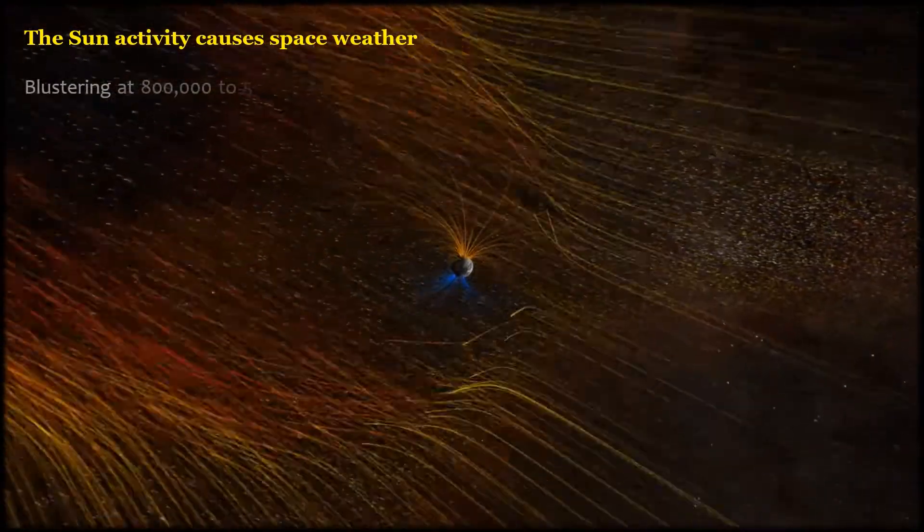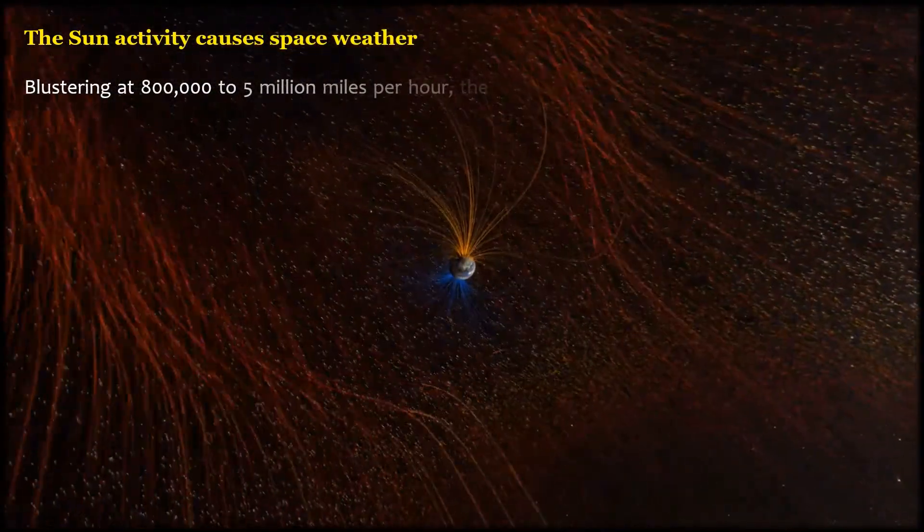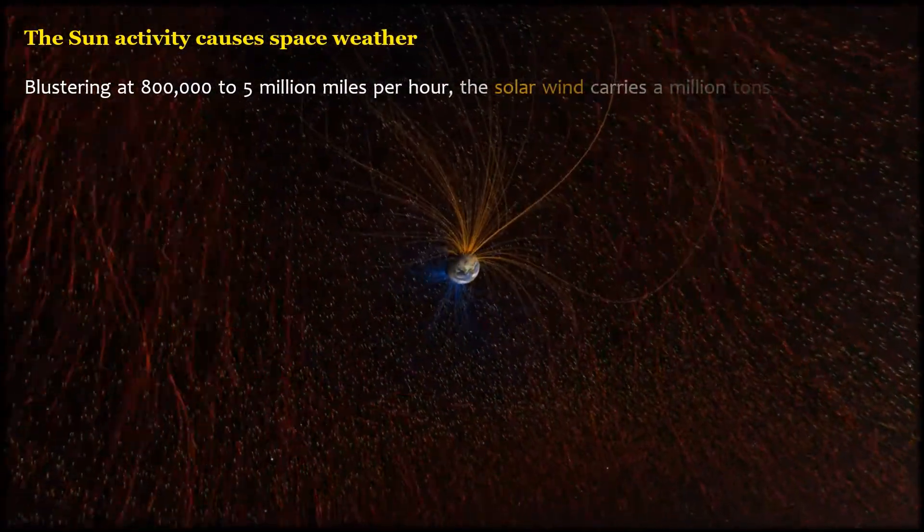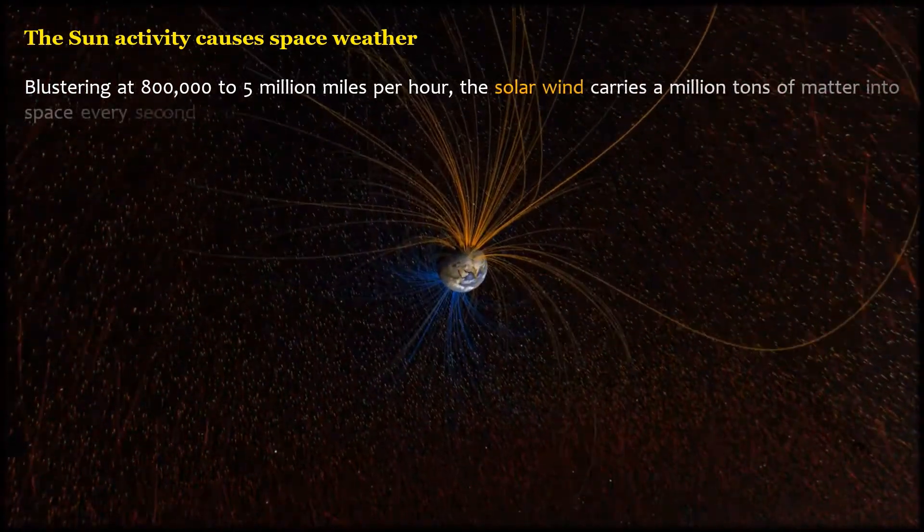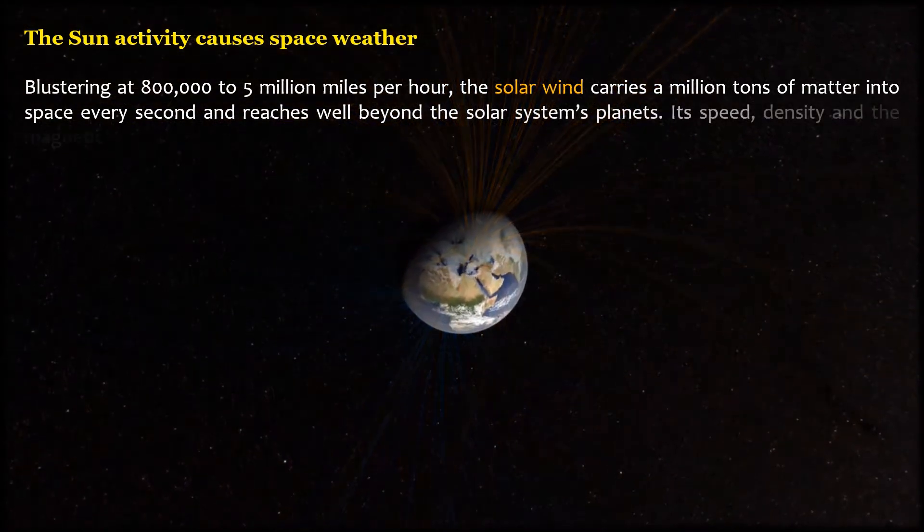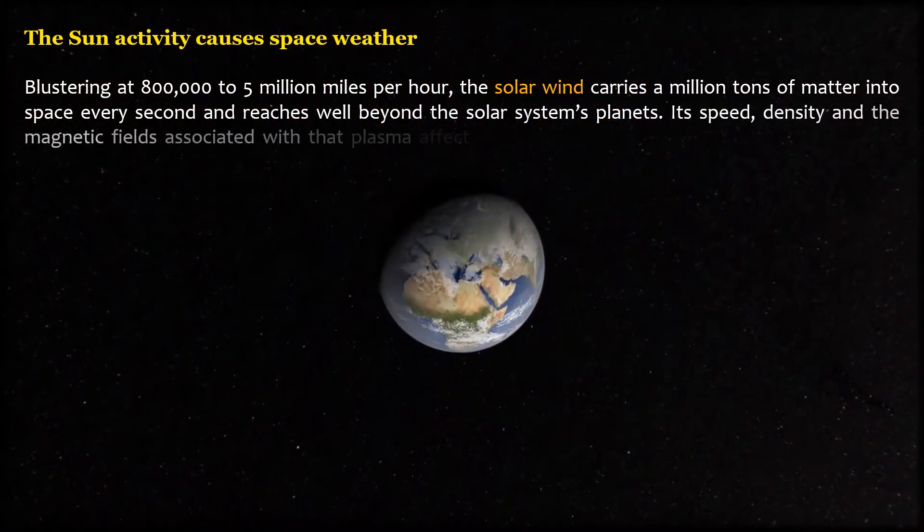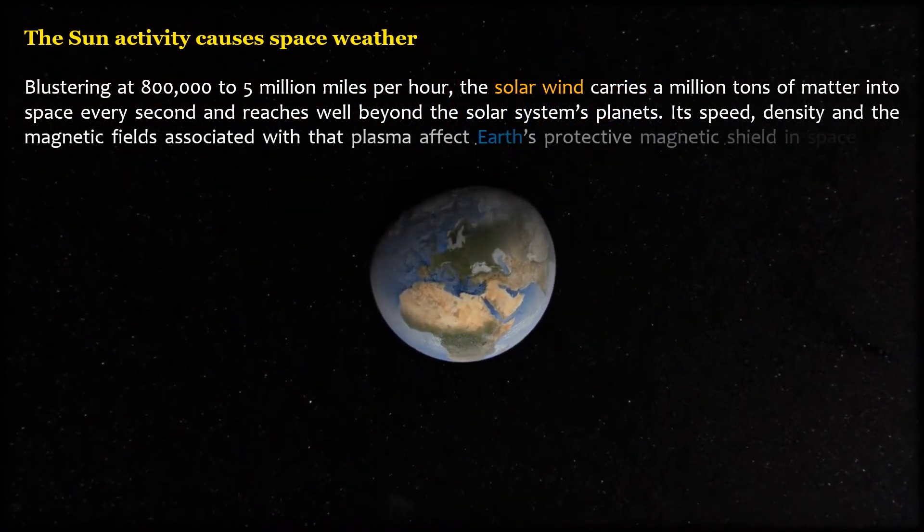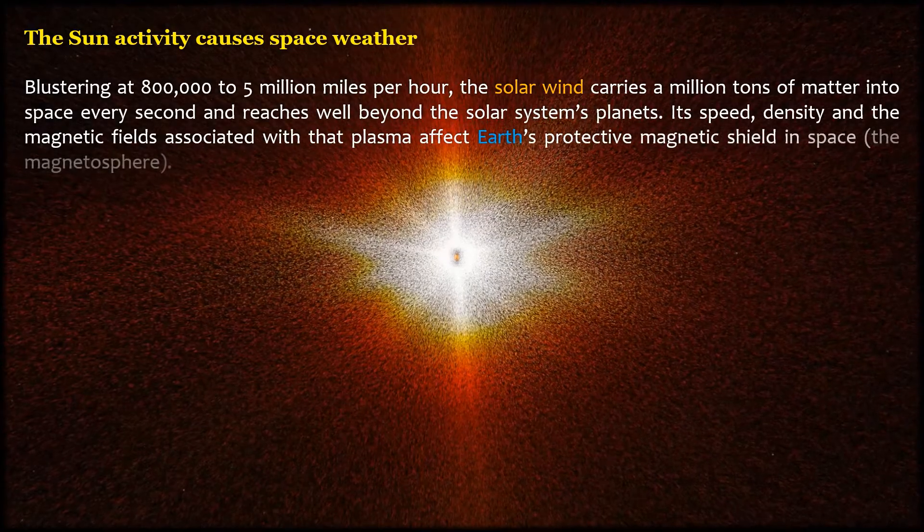Blustering at 800,000 to 5 million miles per hour, the solar wind carries a million tons of matter into space every second and reaches well beyond the solar system's planets. Its speed, density, and the magnetic fields associated with that plasma affect Earth's protective magnetic shield in space, the magnetosphere.